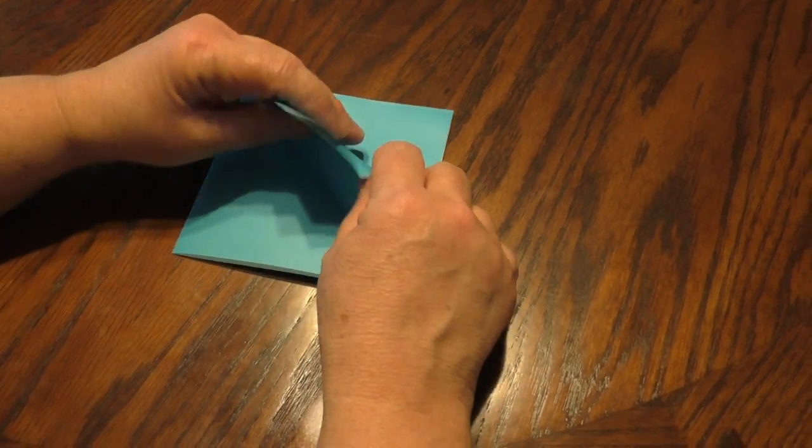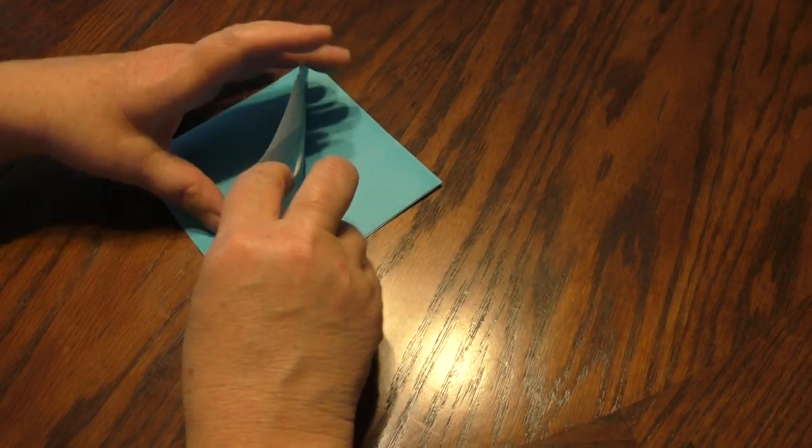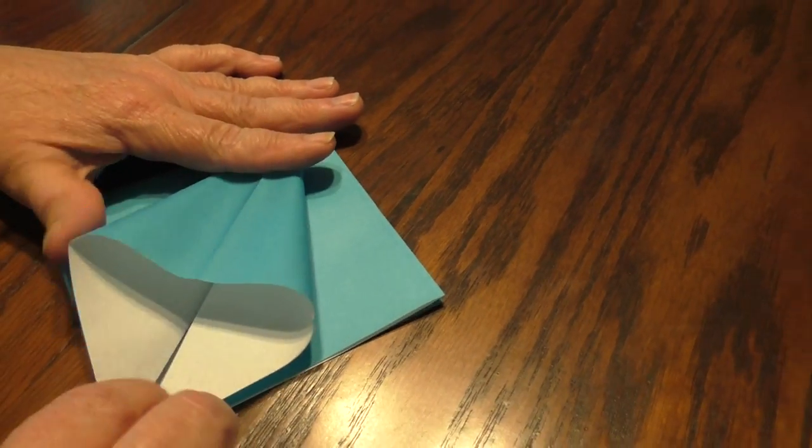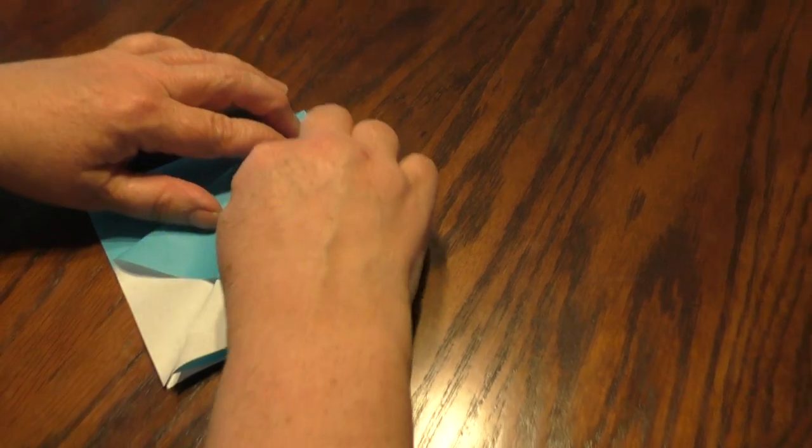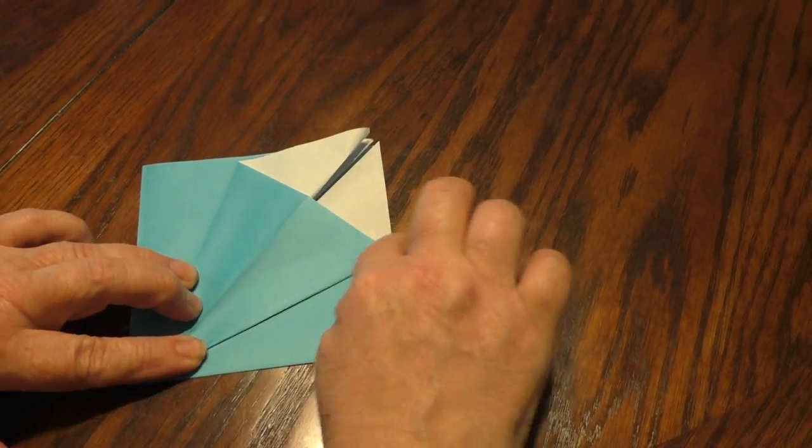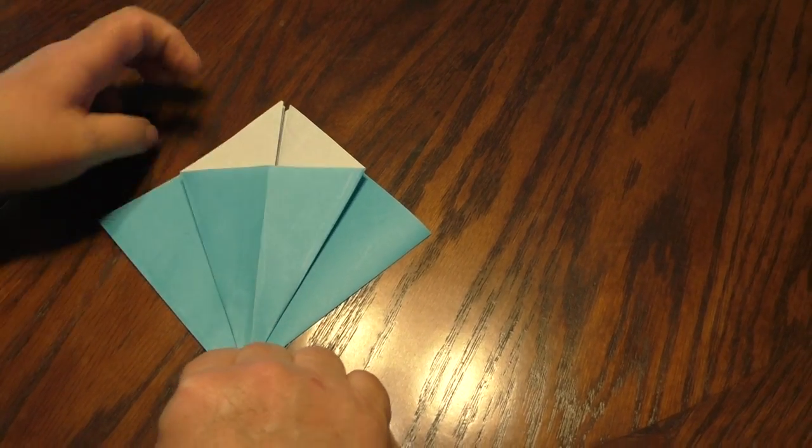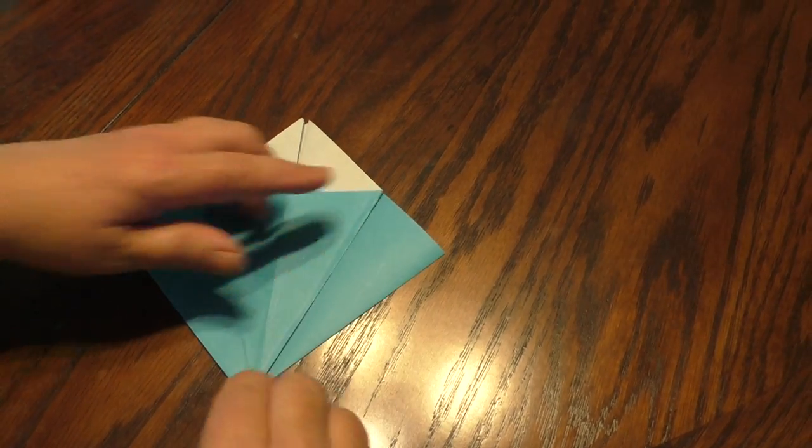Bend it to the center. Now watch this. I'm going to turn it around so I can put my finger back inside. You see that and you squash it down. Look at that. Kind of looks like an ice cream cone. I'd like to make this nice and crisp there.